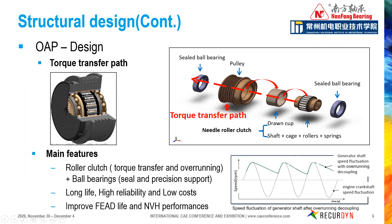The red picture shows the torque transfer path. The torque is transferred from the pulley to the drive cup, then to the shaft, cage, and springs. From its function, OAP is not only similar to a clutch but also similar to a ball bearing. The features of OAP include torque transfer, overrunning decoupling, sealing, and precision support. The lower right picture shows the generator shaft speed fluctuation with overrunning decoupling. We can see the generator shaft speed fluctuation is much less than the engine speed fluctuation. With the help of OAP, belt tension vibration can be reduced, belt length and FEAD system life can be improved, and the NVH performance can be improved.